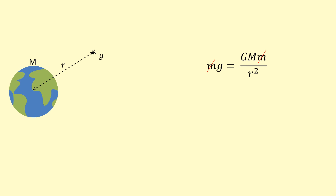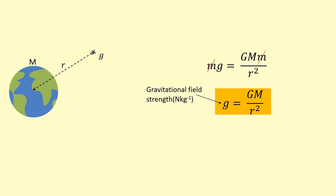Before, we used g as 9.81 all the time on the surface of the Earth, but now g is a variable. If you go further out from the surface of a planet, or consider a different planet, you get a different gravitational field strength. So this is a very useful equation: the gravitational field strength g equals Newton's gravitational constant G times the mass M, divided by the square of the distance r from the center of the mass to the point you're interested in.